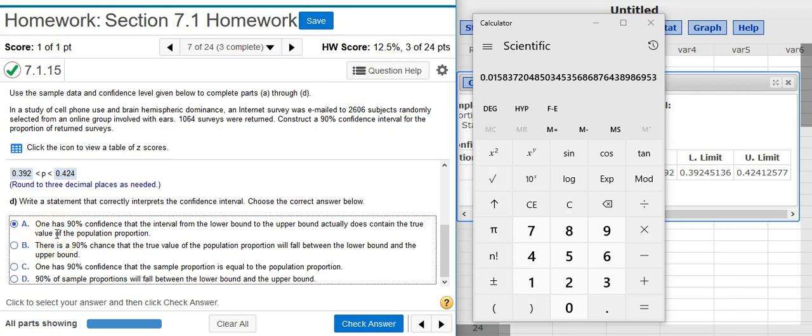But before we hit check answer, let's go ahead and check the other answer options just to make sure. There's a 90% chance that the true value of the population proportion will fall between the lower bound and the upper bound. Close, but it's not quite the same sentiment. 90% chance of falling in? Yeah, I mean, it sounds like the same as 90% confidence, but, you know, the way statisticians think, it's not the same thing. So we don't want to pick that answer.